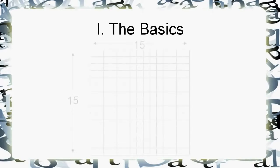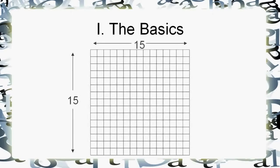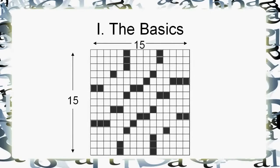So let's talk about the basics first of constructing crosswords before we get into any details. Crosswords have got to be 15 blocks wide by 15 blocks high, and there's a couple exceptions, but that's the general rule. And of course, they're not all white squares, right?